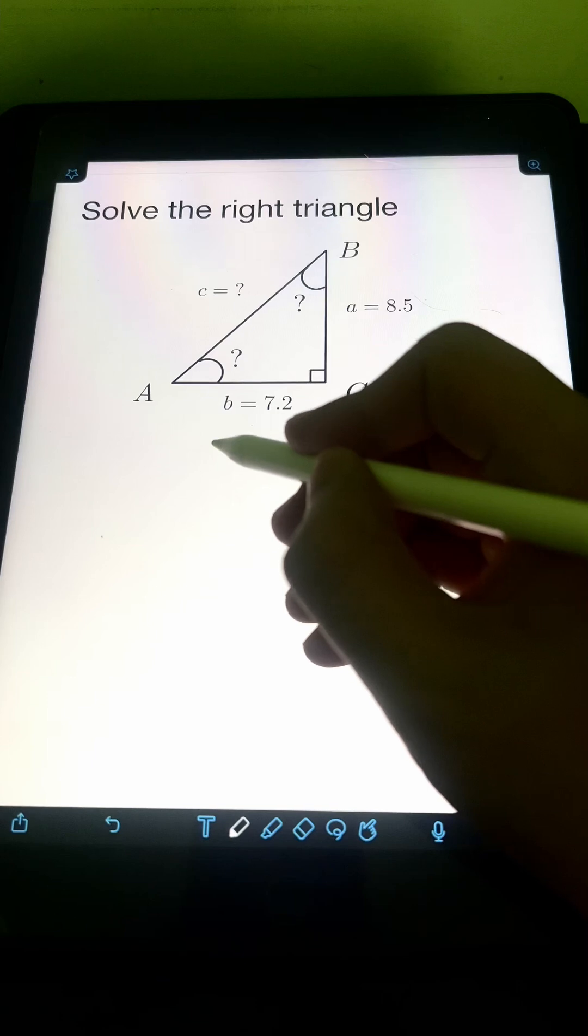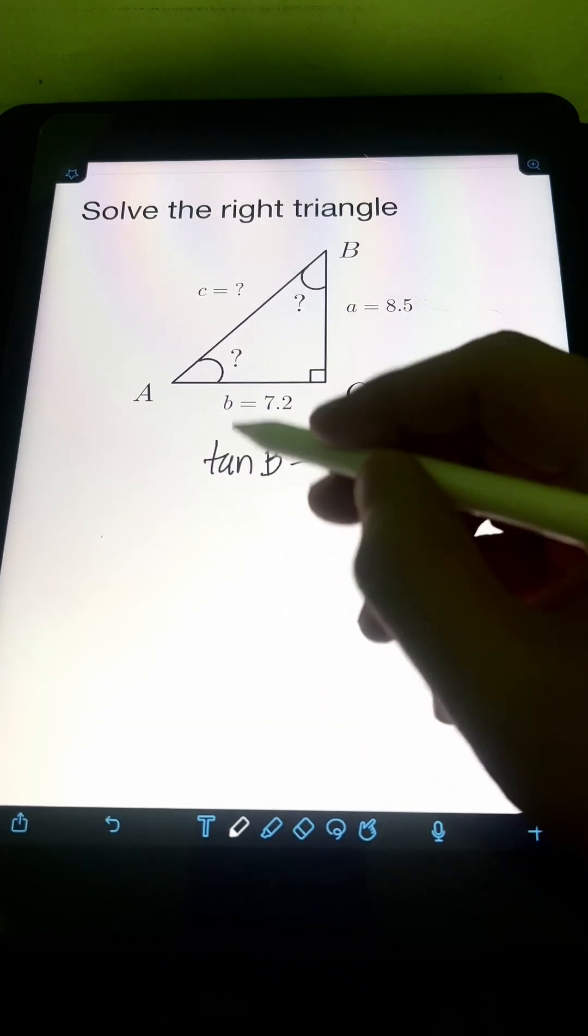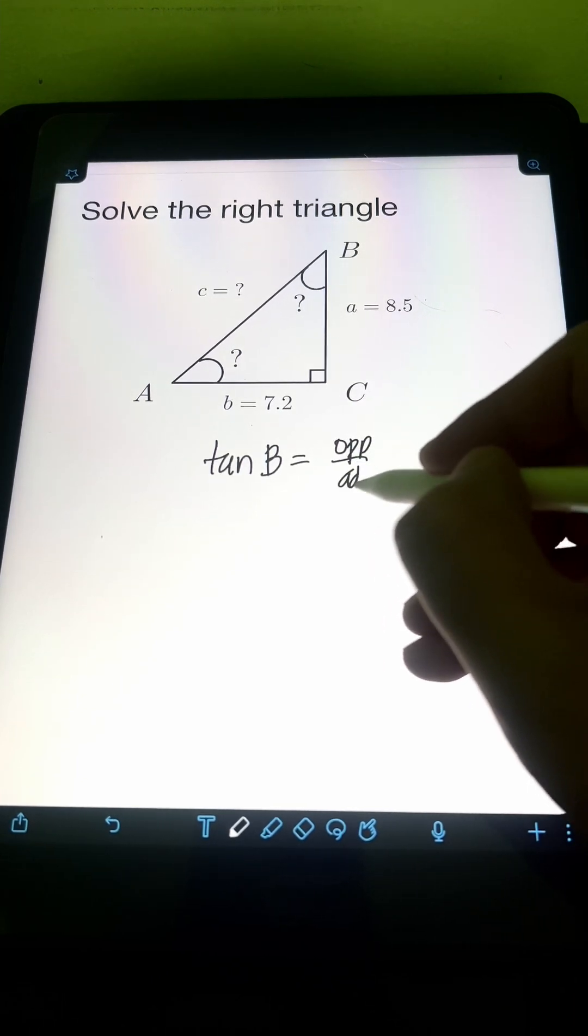To solve for angle B, we can again use the tangent ratio. So we have tangent of B is equal to opposite over adjacent.